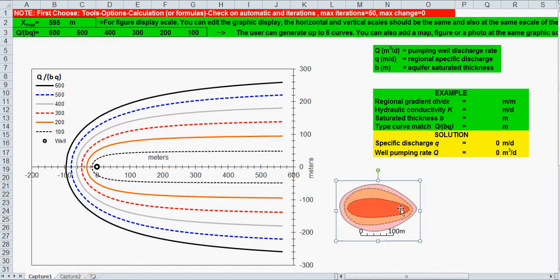Here we are. Now the regional gradient that you can find from your monitoring and observation wells, the hydraulic conductivity, the aquifer saturated thickness. Okay. And let's see which curves match our problem.